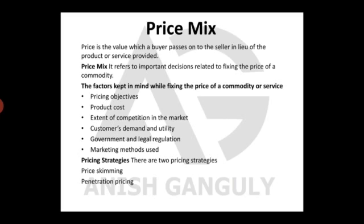Price Mix refers to the important decisions related to fixing the price of a commodity. The first factor is pricing objectives — what the manufacturer wants. If they want a very large market share, they have to keep the price low in the beginning. For example, when Patanjali products were launched, their prices were much cheaper than today. If the manufacturer wants a small, exclusive market for sophisticated customers, they can keep a very high price to fulfill that objective.